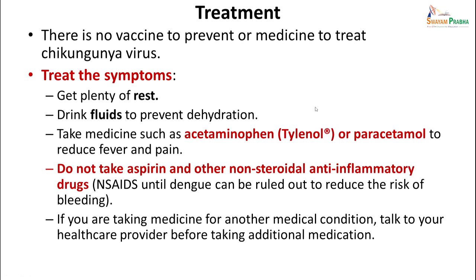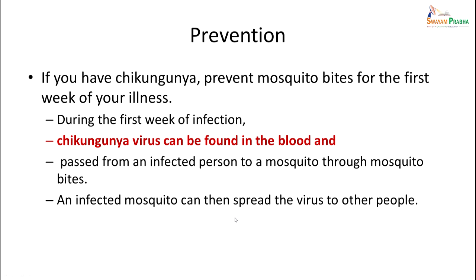There is no vaccine or specific medicine to treat chikungunya. Treatment is symptomatic — give plenty of rest, drink lots of fluids to prevent dehydration, take acetaminophen or paracetamol to reduce fever and pain. Do not take aspirin or other NSAIDs as they can cause induced bleeding. If taking medicine for any other medical condition, consult a healthcare provider. For prevention, if you have chikungunya, prevent mosquito bites during the first week of illness, as the virus is present in the blood and can be passed to others via mosquito bites.